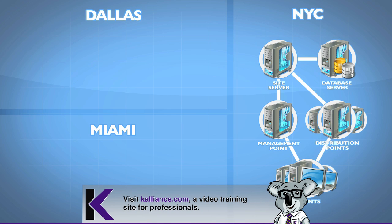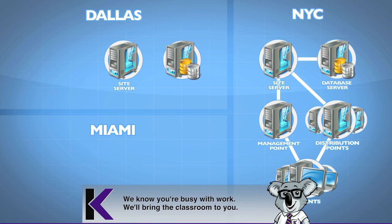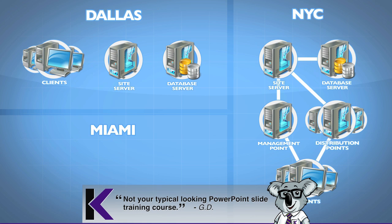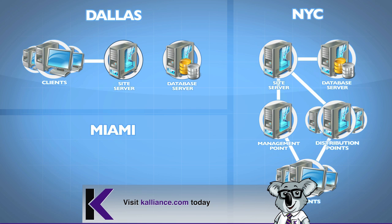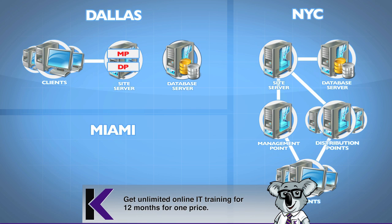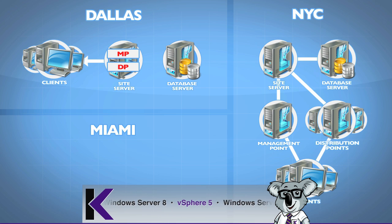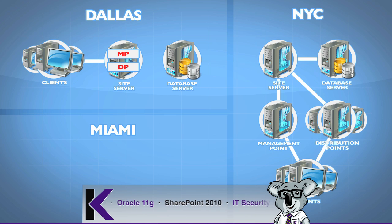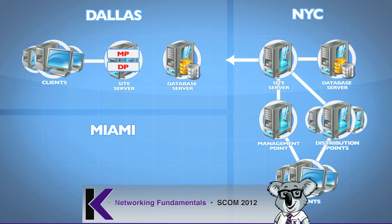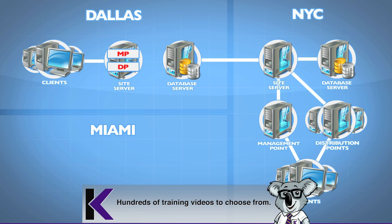Since we don't have a very strong WAN, one option is to deploy a secondary site. That gives us a site system server with its own database, and all of the clients in this location — say a thousand of them — report into this site system. That site system includes a management point and a distribution point. We've protected the WAN bandwidth by providing an all-inclusive site system server, management point, and distribution point, so all client-based communication can go right into it.